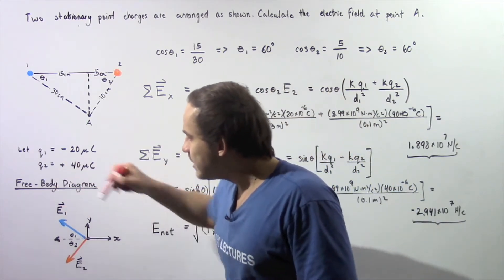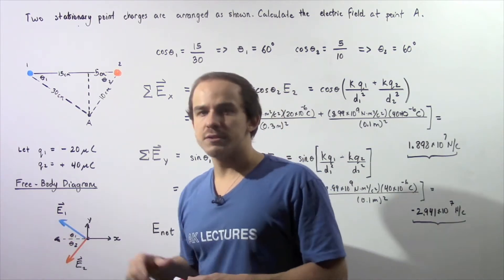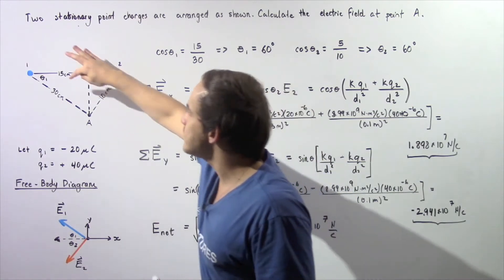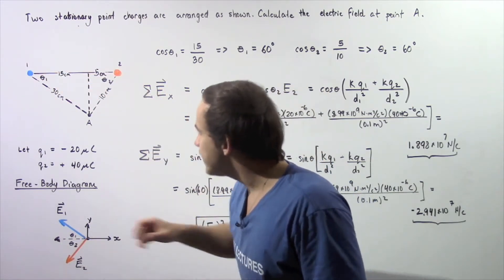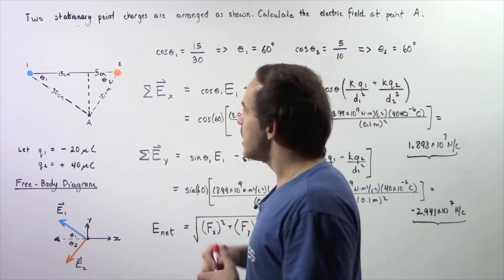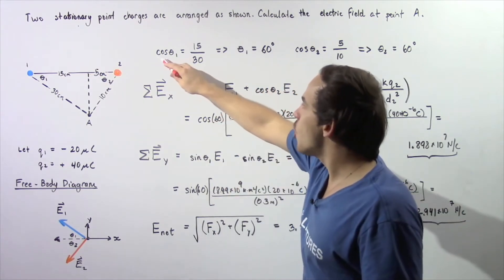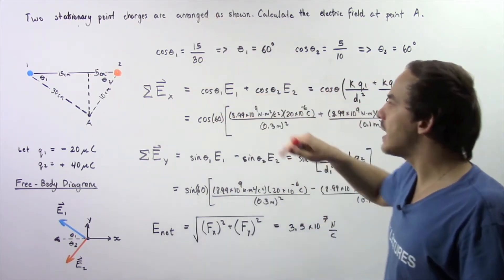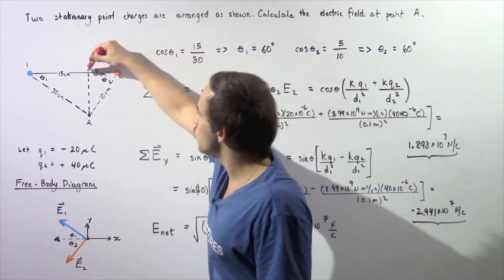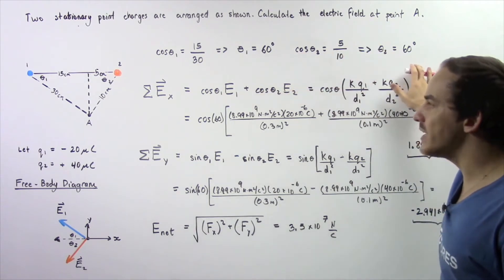Angle theta 1 is the angle vector E1 makes with respect to the x-axis, and angle theta 2 is the angle that E2 makes with the x-axis. Going back to our diagram, theta 1 and theta 2 correspond to angles in their respective right triangles. Using trig functions: cosine of theta 1 equals the adjacent side divided by the hypotenuse, which is 15 divided by 30, giving an angle of 60 degrees. The same applies to theta 2 — both angles are equal at 60 degrees.